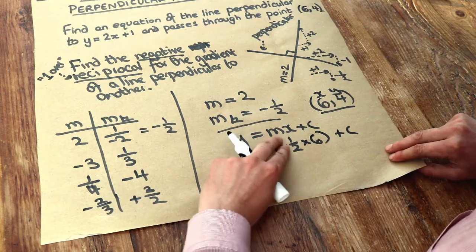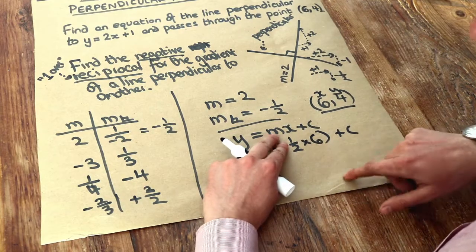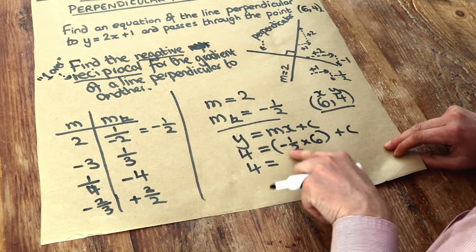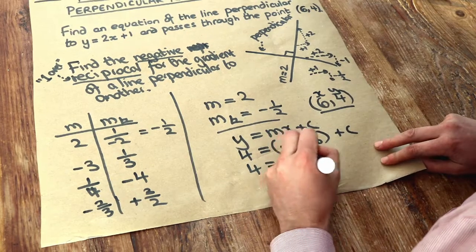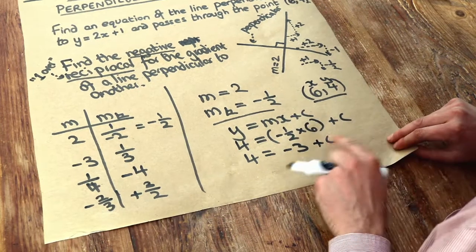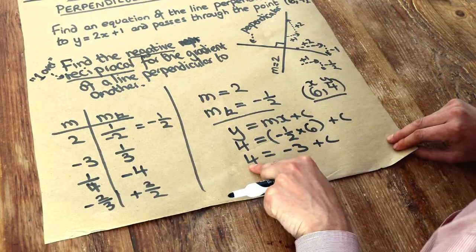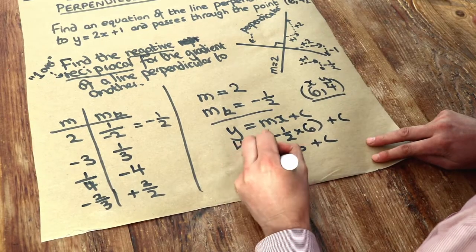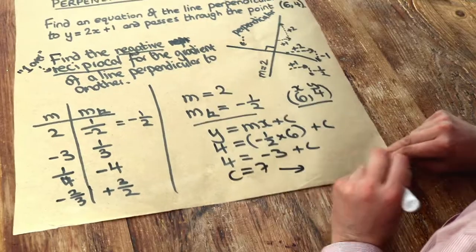Well if you ignore that minus at the moment, what's half times 6? That's another way of saying half of 6, which is 3, and because that's negative it's going to be minus 3, because negative times positive is negative. And then if we were to do it in our head, well minus 3 plus what is 4? Well minus 3 plus 7 is 4. So c is 7, and that means we've got the equation of our straight line.